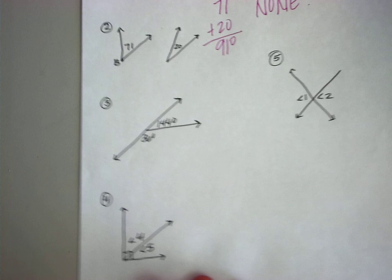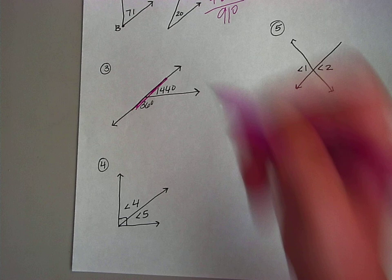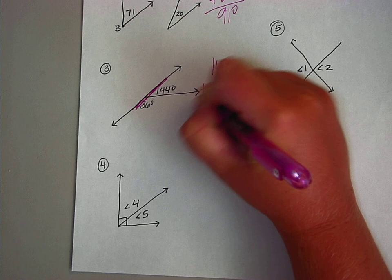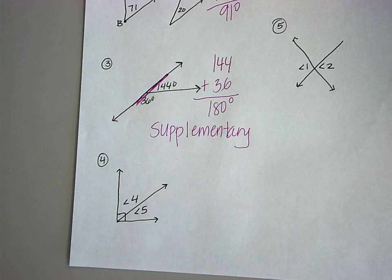Number three — what do we think this is? I could see how it looks adjacent, but adjacent is not going to have degrees. It does form a straight line, so we should automatically think it's supplementary. Let's add up the degrees and see: 140 plus 36 is 180 degrees. So it is supplementary.